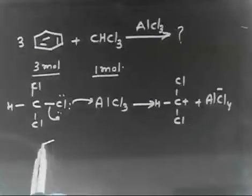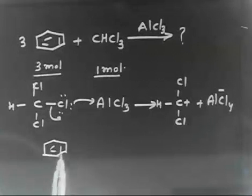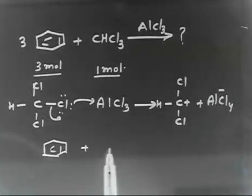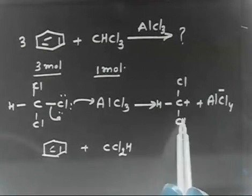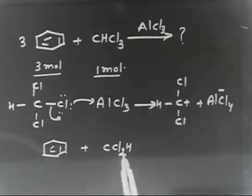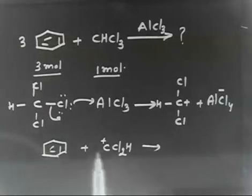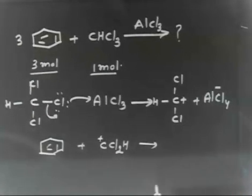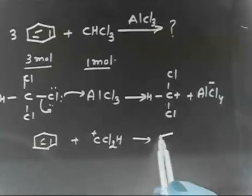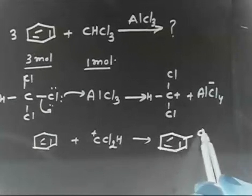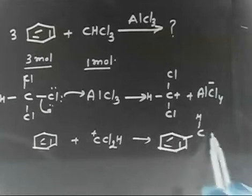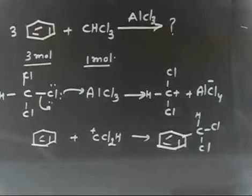So you have a carbocation, CHCl2+. Now this will react with the benzene ring. You will have a benzene ring with CHCl2 attached — essentially CCl2H+. If it adds in, you get the benzene ring with CHCl2 substituted in.